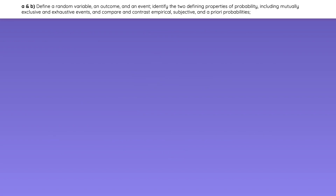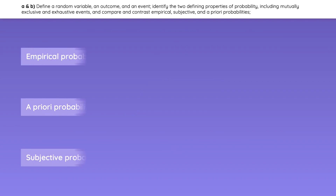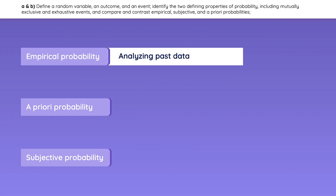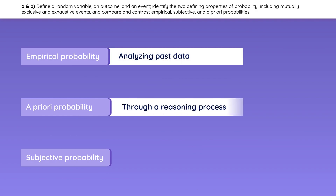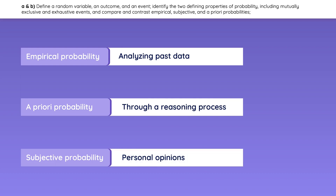You should also be able to differentiate between the following types of probabilities. Empirical probabilities are found by analyzing past data. A priori probabilities require a reasoning process. And subjective probabilities are just personal opinions. Don't forget that both empirical and a priori probabilities are objective probabilities.